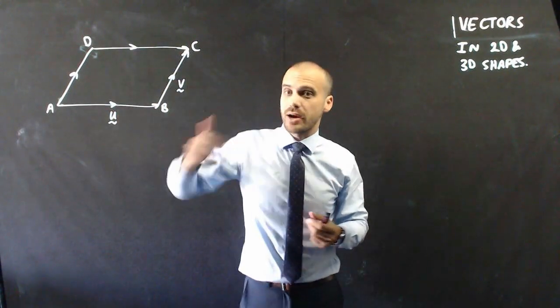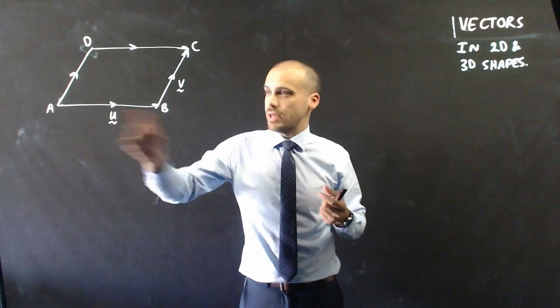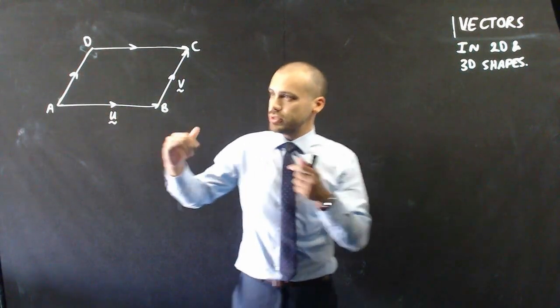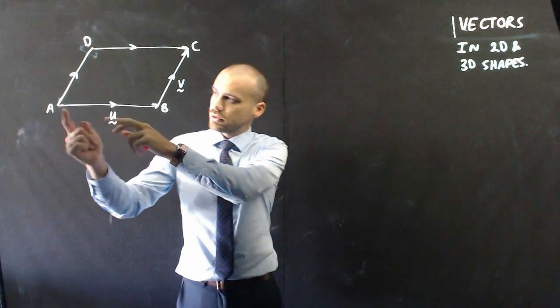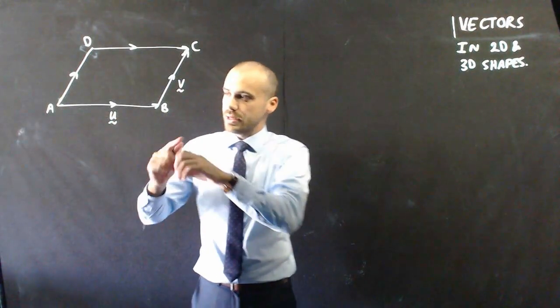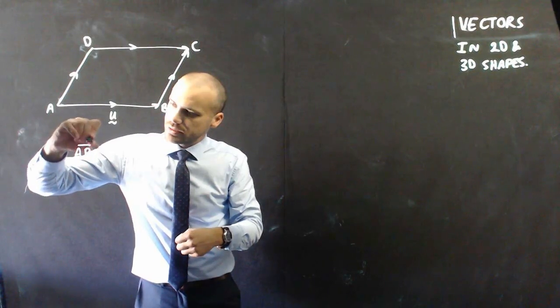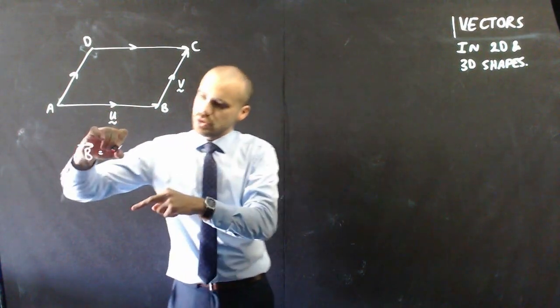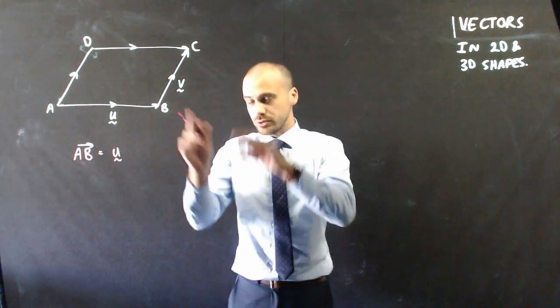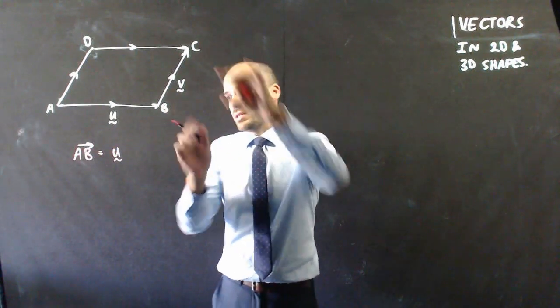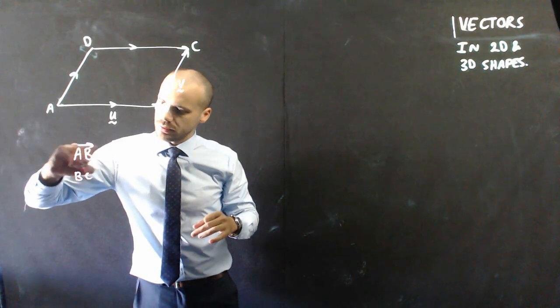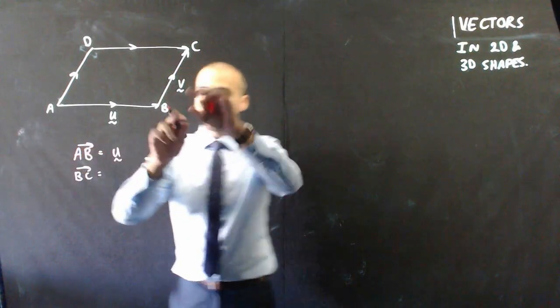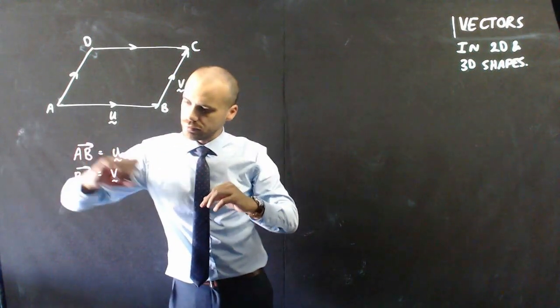What I have here is a parallelogram called ABCD and you can see that I've called the vector from AB, so I can say the vector from A to B is equal to, and I've just called that vector U. And you can also see that the vector from B to C I've called that V.